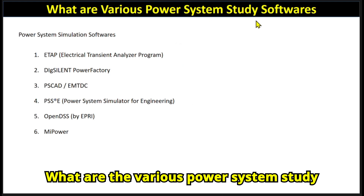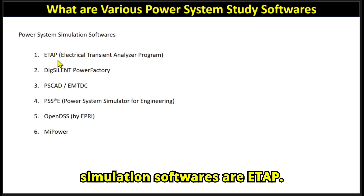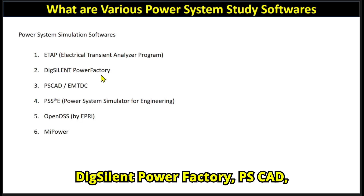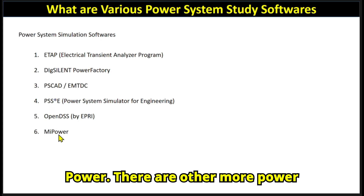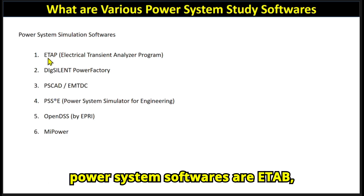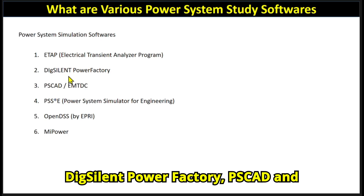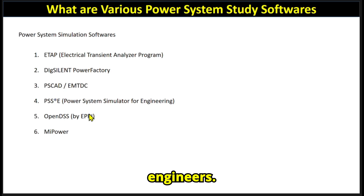What are the various power system study simulation softwares? The main ones are ETAB, DIgSILENT PowerFactory, PSS/CAPE, PSS/E, OpenDSS, and MATPOWER. There are other softwares as well, but ETAB, DIgSILENT PowerFactory, PSS/CAPE, and PSS/E are the ones mainly used by engineers.